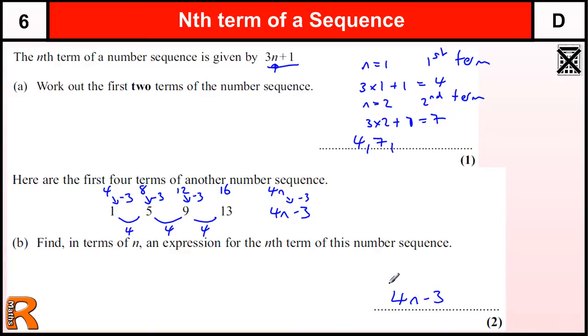We get one mark if we had the 4n and then this bit was wrong, we'll just have 4n on its own.